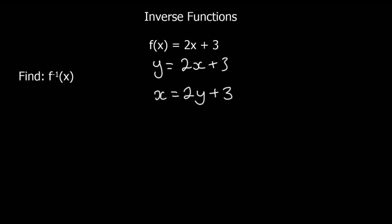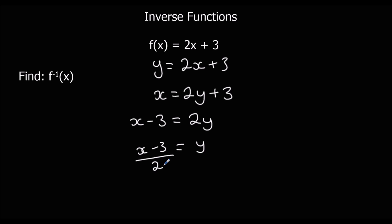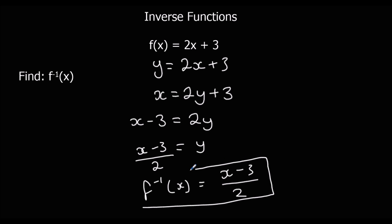That is the inverse function, but we don't want it in that form — it needs to be y equals, so we need to make y the subject of the formula. I'm going to take 3 from both sides: x minus 3 equals 2y. Then divide both sides by 2, giving x minus 3 over 2. So f⁻¹(x) is (x minus 3) over 2 — that is the inverse function.